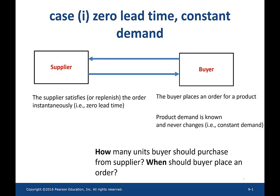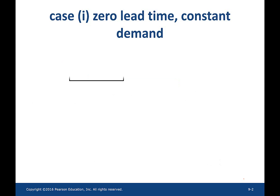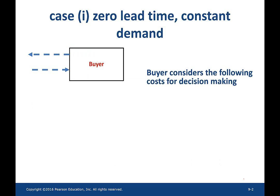There are two key questions that a buyer should address. First is how many units the buyer should purchase from the supplier. Second one is when should the buyer place an order. Now let's focus on the buyer.